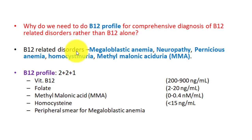Methylmalonyl coenzyme A mutase is a mitochondrial enzyme, while methionine synthase is a cytosolic enzyme — only two enzymes total, one in mitochondria and one in cytosol. Both names start with M: methylmalonyl coenzyme A mutase in mitochondria, and methionine synthase in cytosol.